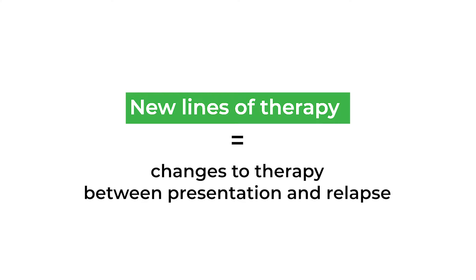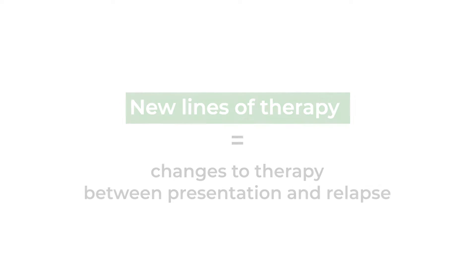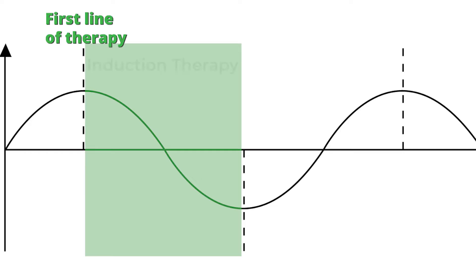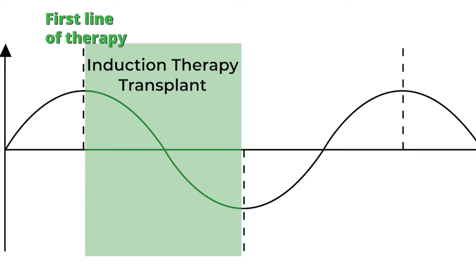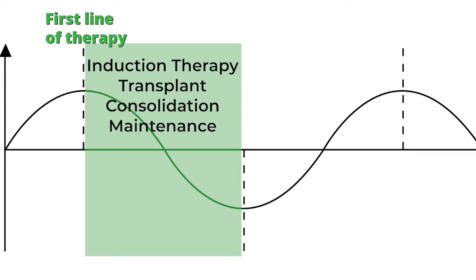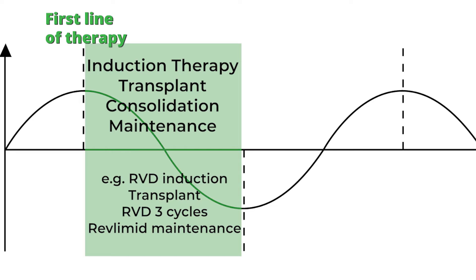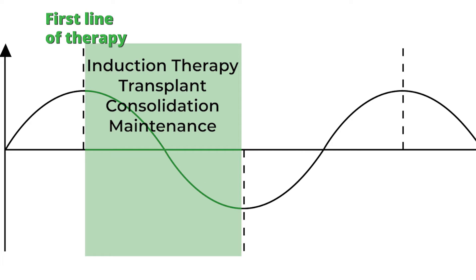The first treatment can involve induction therapy with or without a stem cell transplant, usually followed by consolidation and maintenance therapy. That is basically one line of therapy, simply because the disease presented, has been treated, and is now controlled.